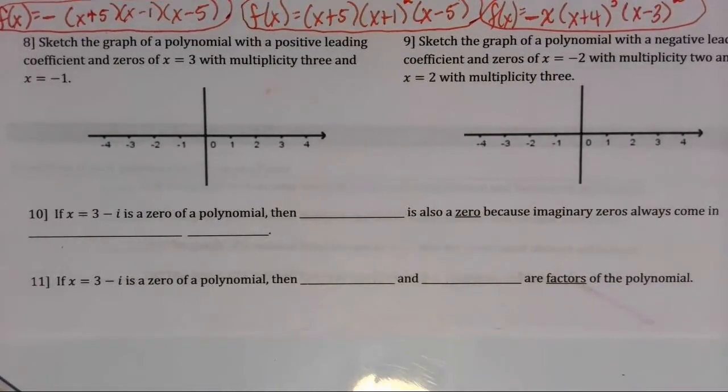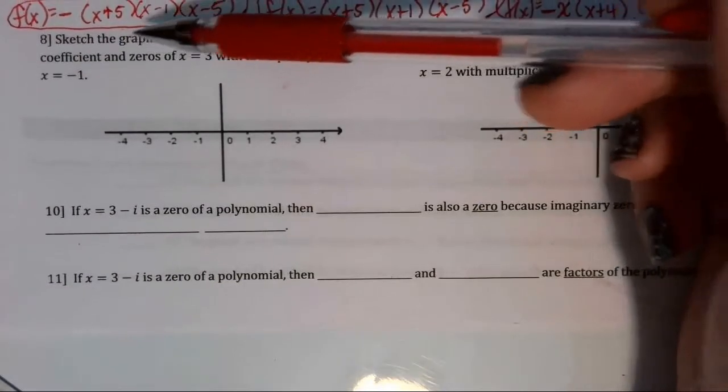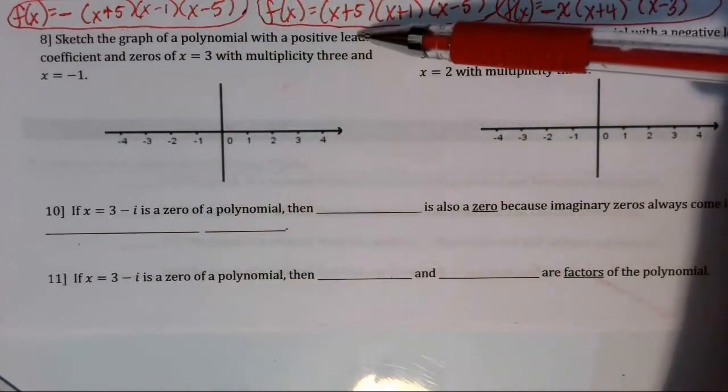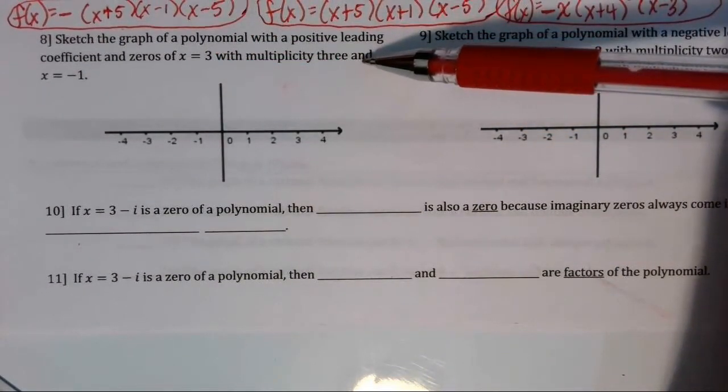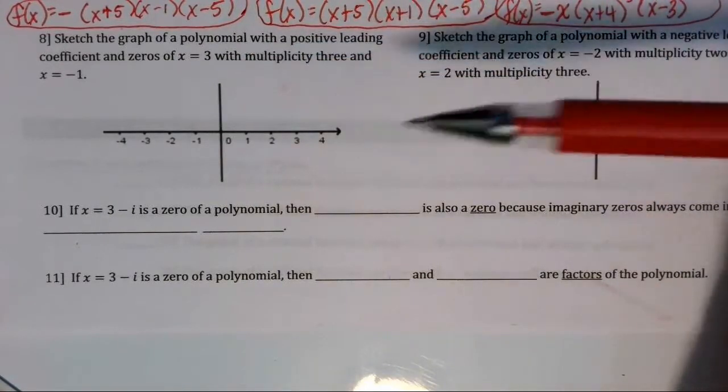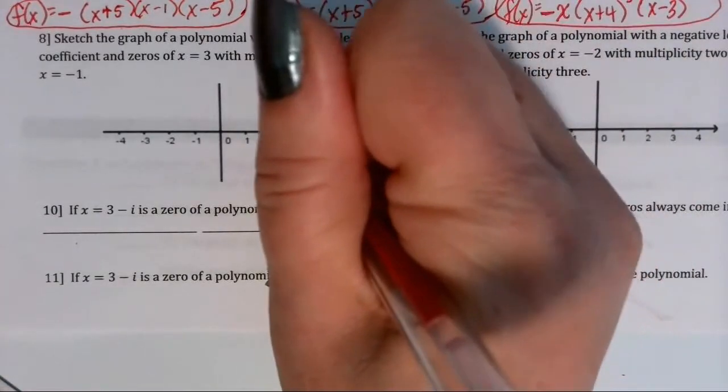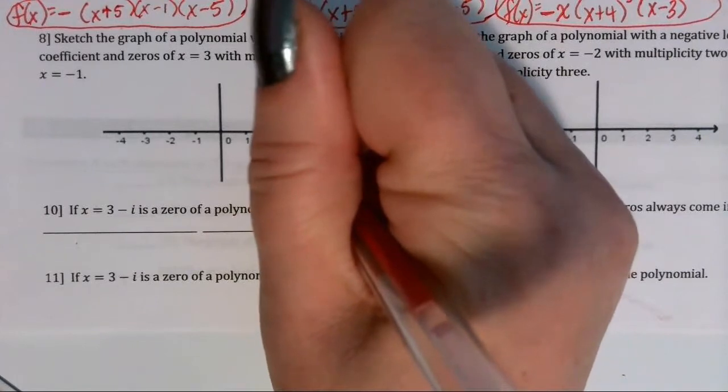Okay, looking at number 8 on the review, we want to sketch the graph of a polynomial with a positive leading coefficient and zeros of x equals 3 with multiplicity 3 and x equals negative 1.